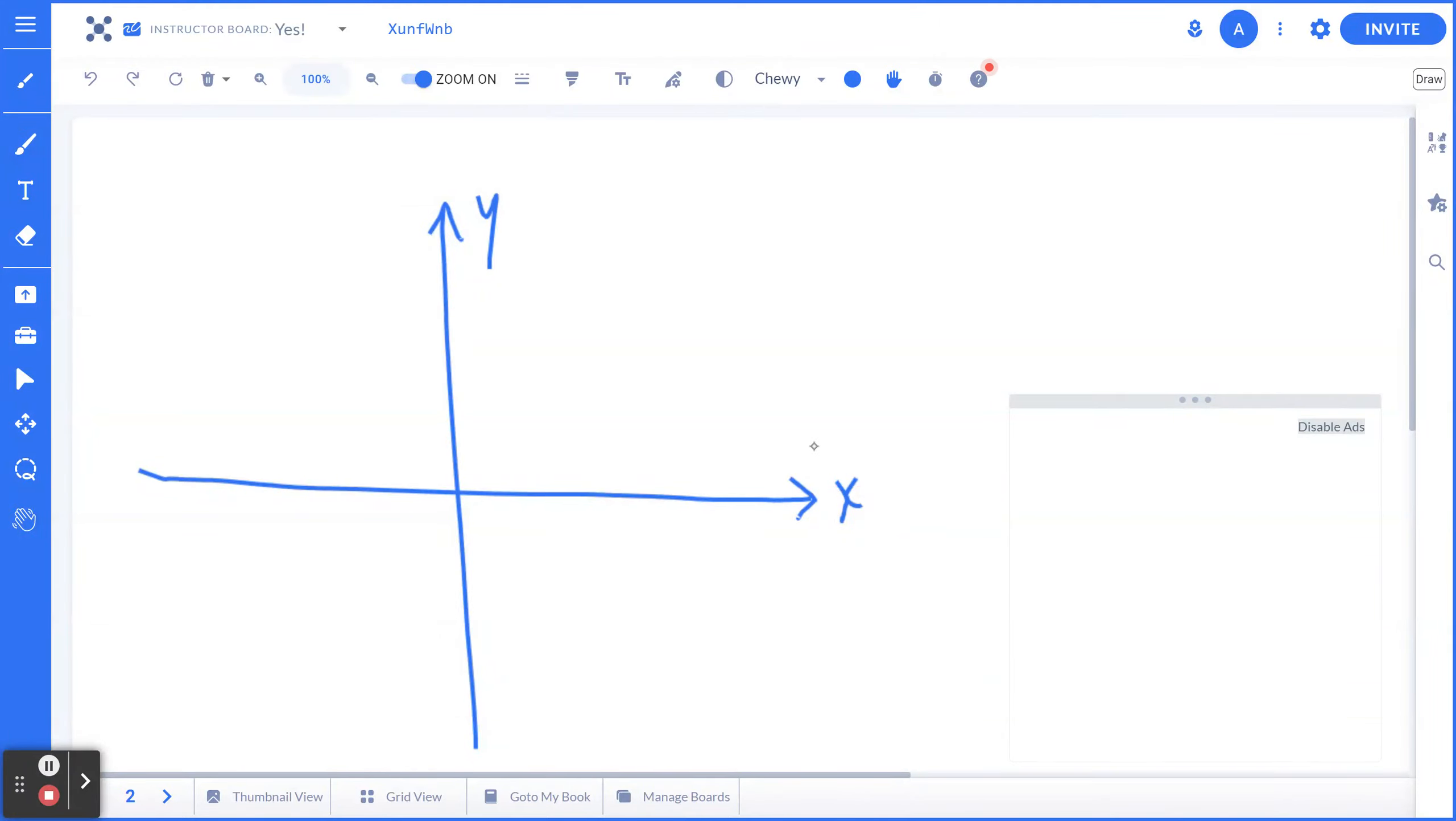And again, you can start with the vertical and the horizontal asymptotes. So for example, when you think about y equal to x squared plus x minus 6 divided by x squared minus 4, the first step is to identify the horizontal asymptote, which is basically located at y equal to 1.